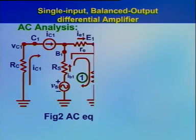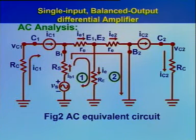In AC analysis, we determine differential voltage gain, input resistance, and output resistance. To draw the AC equivalent circuit, set DC supply voltages VCC and VEE to zero and replace transistors Q1 and Q2 by their T-equivalent circuits, as shown in figure 2. Now let us determine the differential voltage gain.